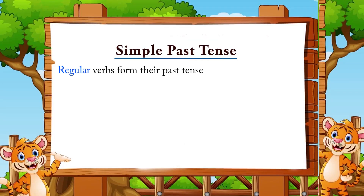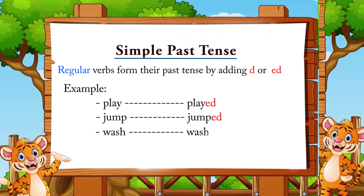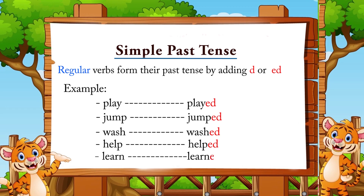Regular verbs form their past tense by adding -d or -ed. Examples: play → played, jump → jumped, wash → washed, help → helped, learn → learned.